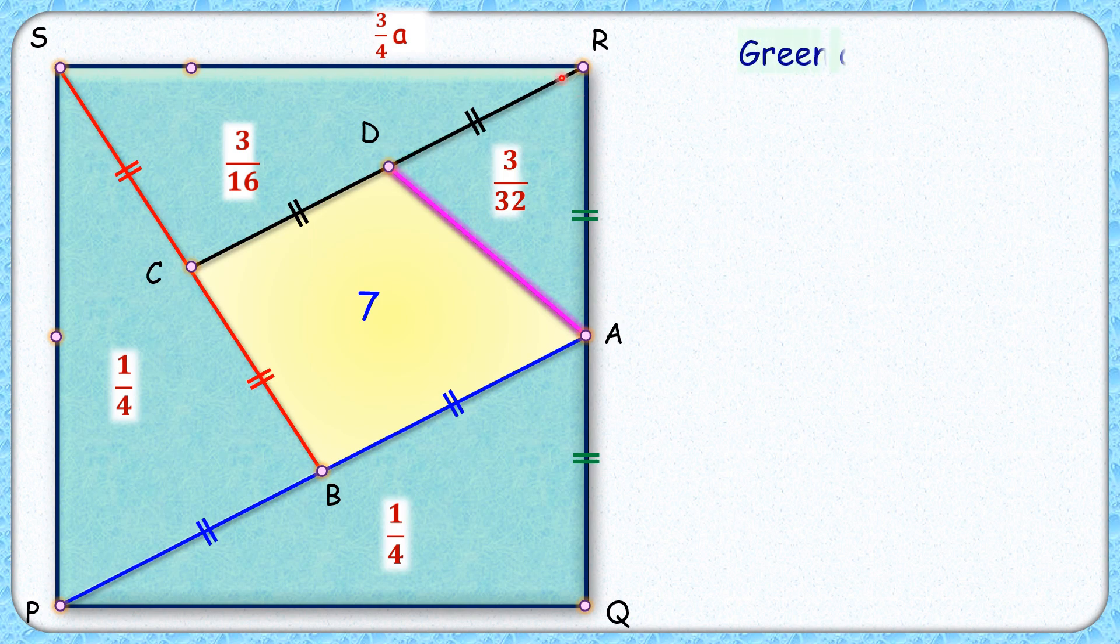Now total green region will become 1 by 4 plus 1 by 4 plus 3 by 16 plus 3 by 32nd part of the full square, which is nothing but 25 upon 32nd part of the square.